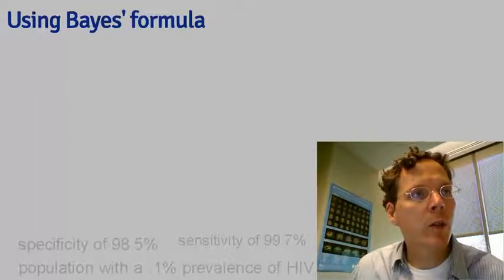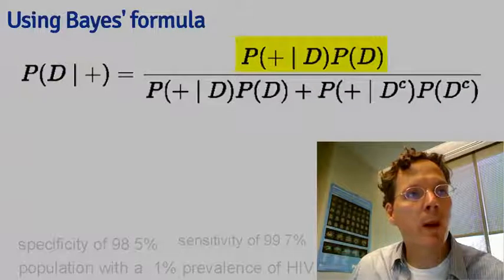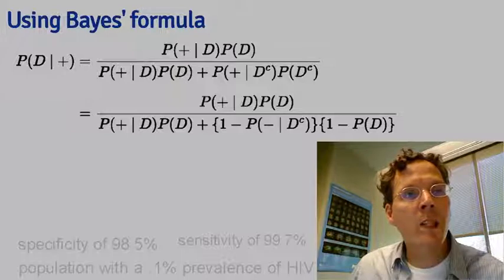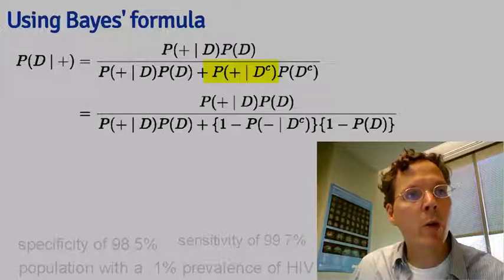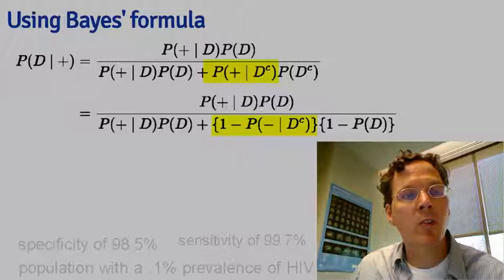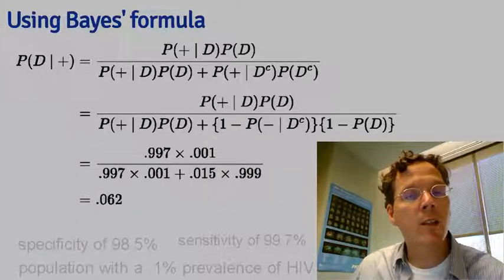Let's plug directly into Bayes' rule. We want the probability of disease given a positive test result. That's the probability of the positive test result given disease times the probability of disease, divided by the denominator. The probability of a positive test result given that the person does not have the disease is 1 minus the specificity. And the probability of disease complement is 1 minus the probability of disease. Rewritten only in terms of known quantities, we plug in the numbers and get 6% as our probability.